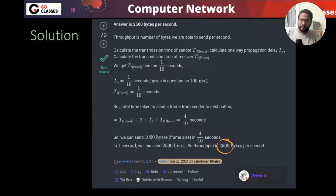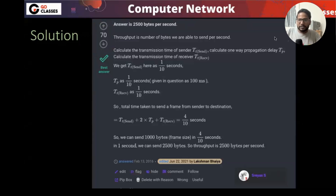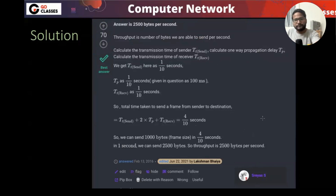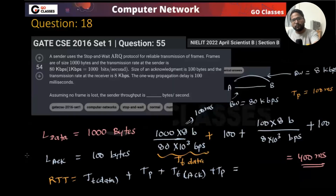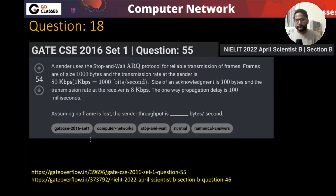You can verify this against the official solution, which does the same thing. Just find the RTT, and then throughput = length upon RTT. Have you understood this question? Was there any difficulty?